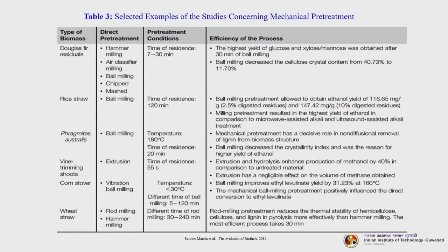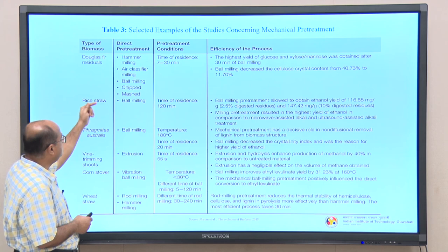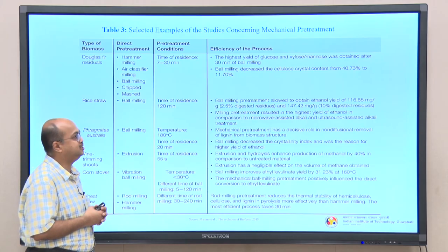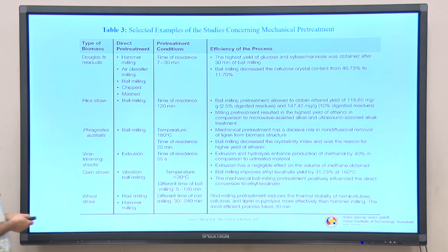A selected examples table for mechanical pretreatment lists different biomass types and methods including hammer milling, air classifier milling, ball milling, chipping and massing with residence times of 7 to 30 minutes. The highest yield of glucose and xylose or mannose was obtained after 30 minutes of ball milling. Ball milling decreased the cellulose crystallinity from 40.73% to 11.7%, which is a significant decrease.